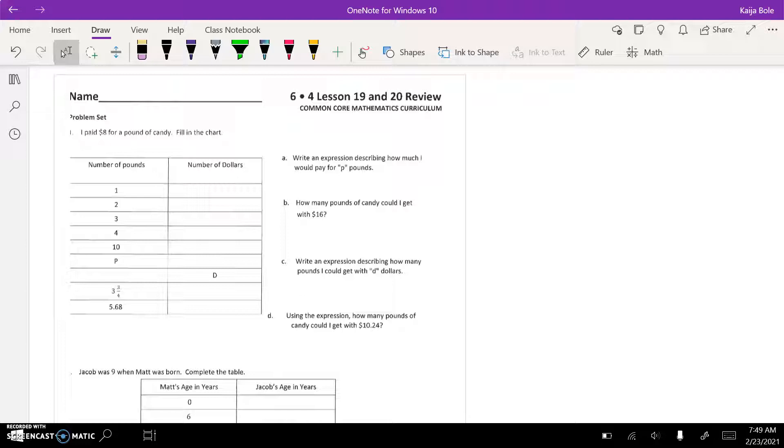Like at number one, it says I paid eight dollars for a pound of candy, fill in the chart. Eight dollars for a pound, so for one pound it's eight dollars. That means for two pounds it would be sixteen dollars, three pounds twenty-four, four thirty-two.